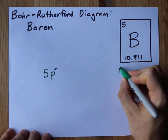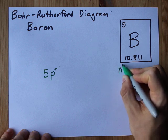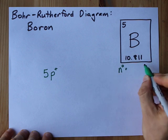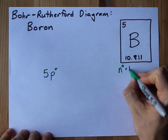And the number of neutrons, a lot of teachers use an n with a superscript 0, is going to be the rounded version of this number, 10.8 rounds to 11.